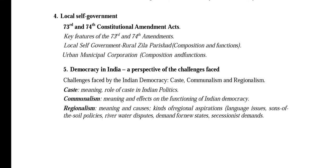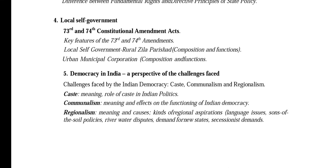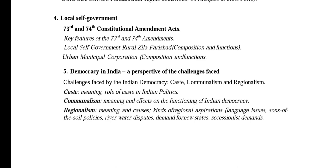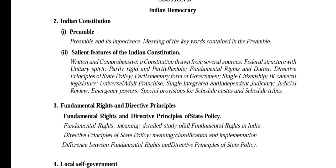The fifth chapter is Democracy in India — challenges faced by Indian democracy related to caste, communalism, religion, and regionalism. You may be asked about the meaning of caste and the role of caste in Indian politics, the meaning and effects of communalism on Indian democracy, and the meaning and causes of regionalism.